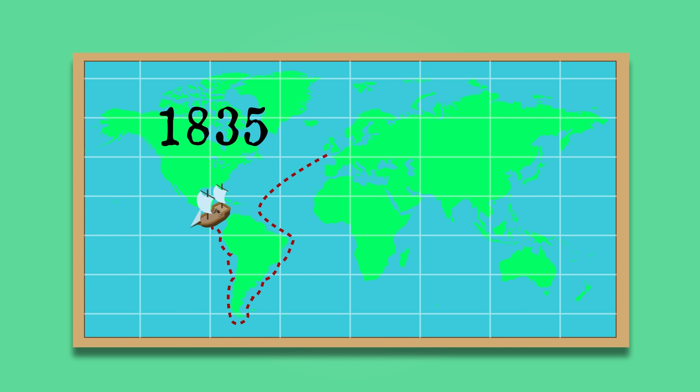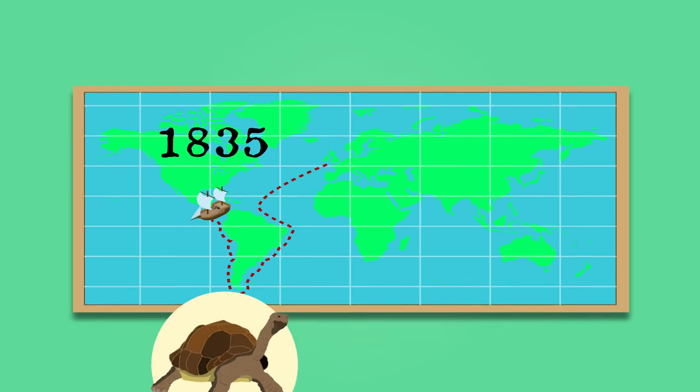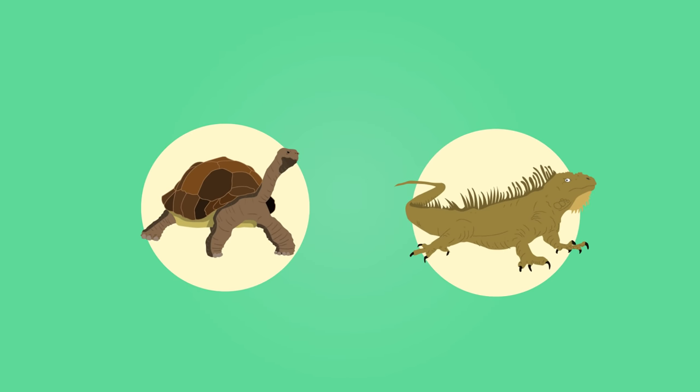In 1835, the Beagle arrived at the Galapagos Islands near Ecuador. What Darwin found there surprised him greatly. As well as giant tortoises and marine iguanas, Darwin collected and preserved a variety of different songbirds called finches.